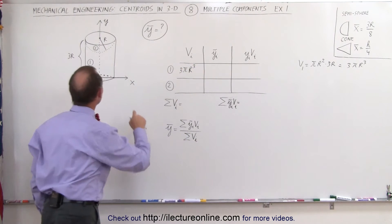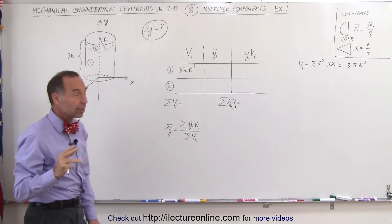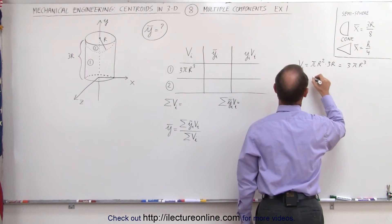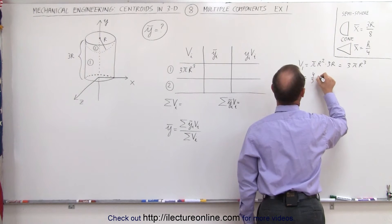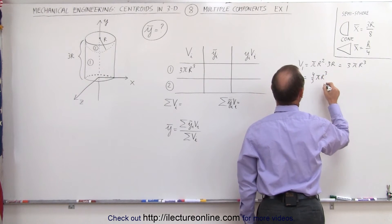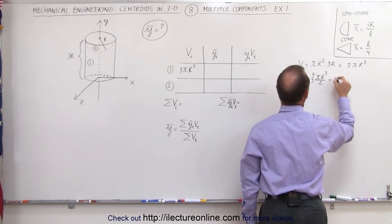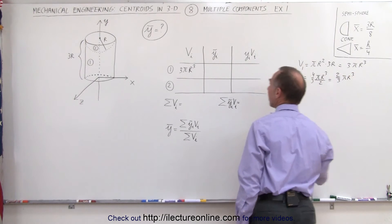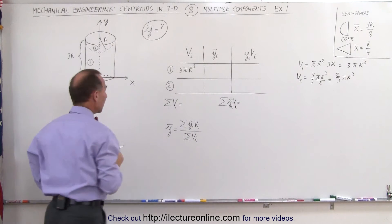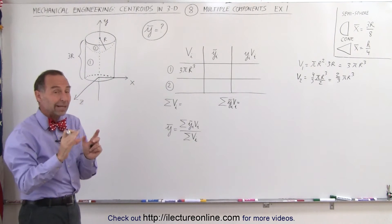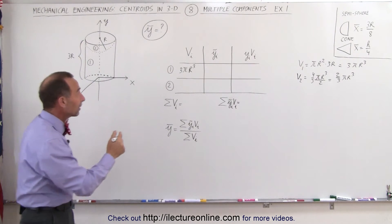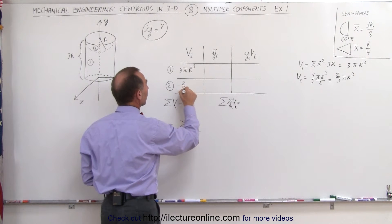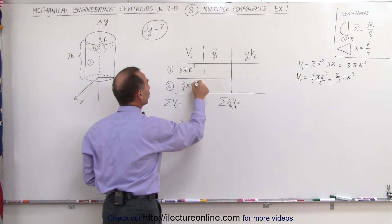How about the volume of the semisphere? We know the volume of the whole sphere is four-thirds pi r cubed, but when we divide it by two, we get two-thirds pi r cubed, which is the volume of the semisphere. But since it's been hollowed out, we need to subtract that volume — give it a negative volume — negative two-thirds pi r cubed.